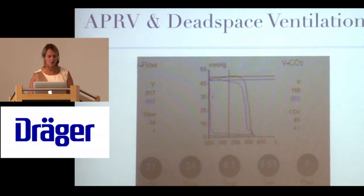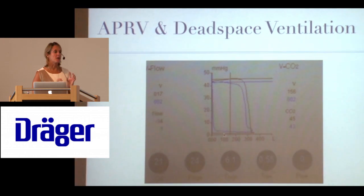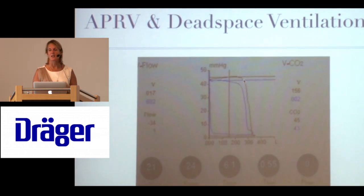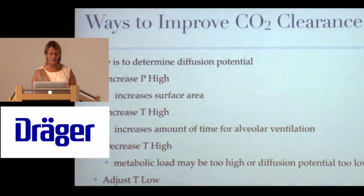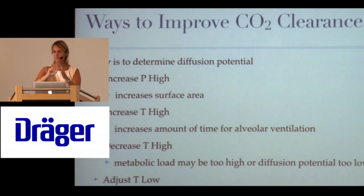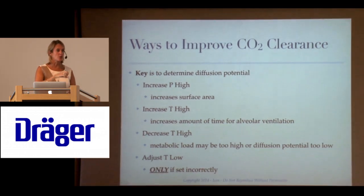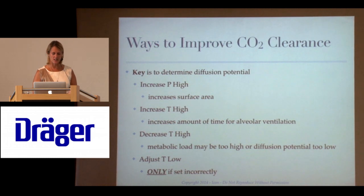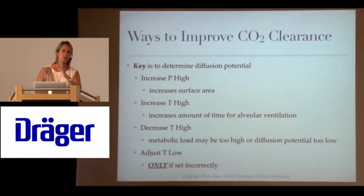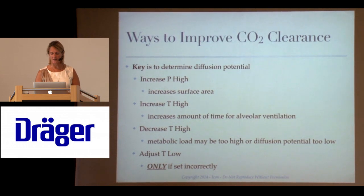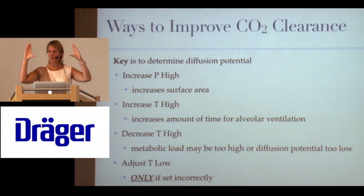Dr. Abashi will go over data comparing improperly set APRV at 10% versus properly set at 75%. At 10%, gas flow goes nearly to zero and you can see the alveoli close — significant airway closure. When the T low is decreased so termination is at 75%, there is very little airway closure. The alveoli stay open and don't collapse.